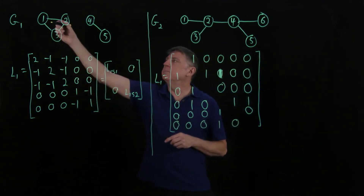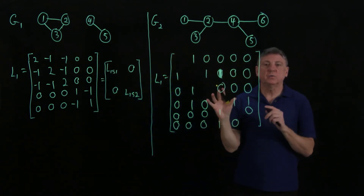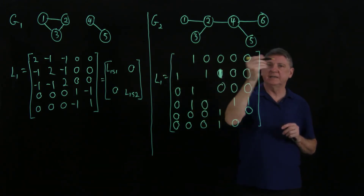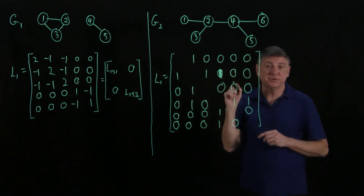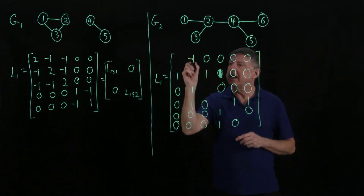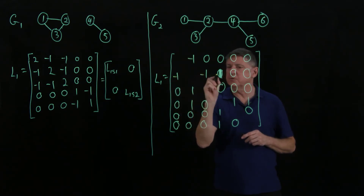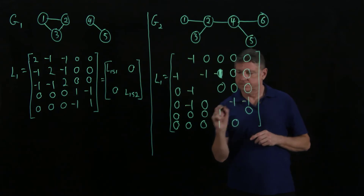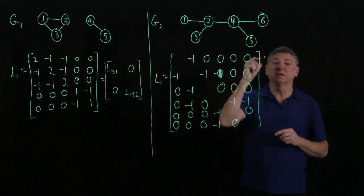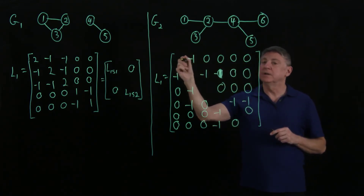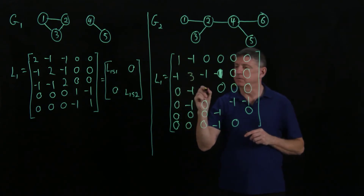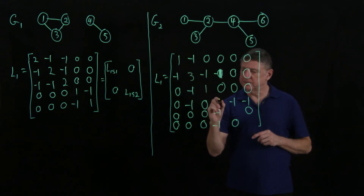Previously we computed the degree by looking at the graph. Now let's compute the degree using linear algebra. After negating every entry in the adjacency matrix, we count the number of minus 1s in each row. Row 1 has 1 minus one, row 2 has 3 minus ones, row 3 has 1, row 4 has 3, row 5 has 1, and row 6 has 1. These counts give the degrees, which fill in the diagonal.